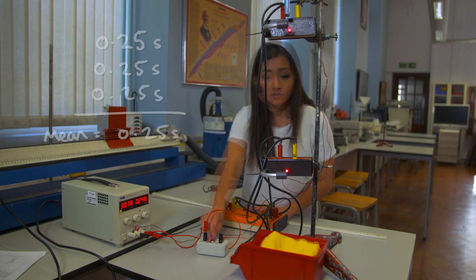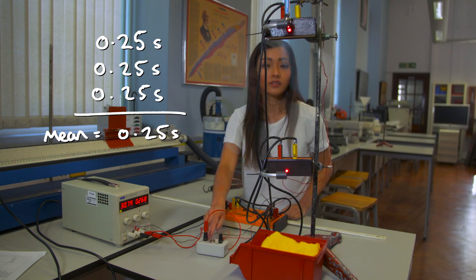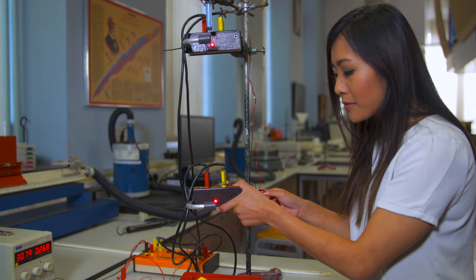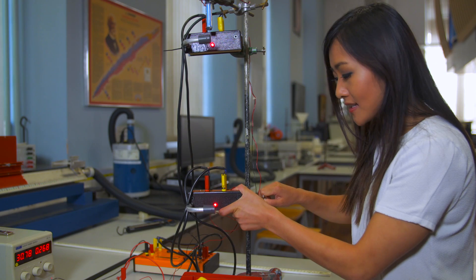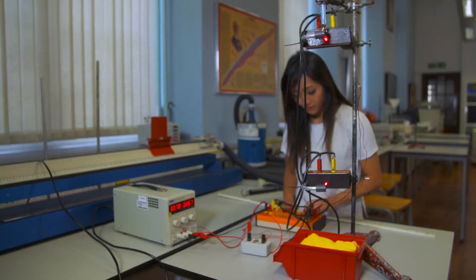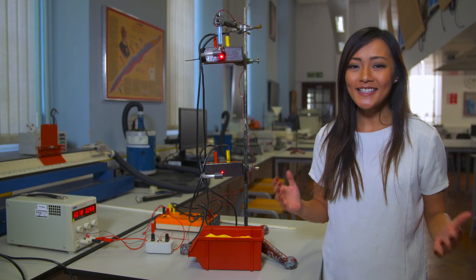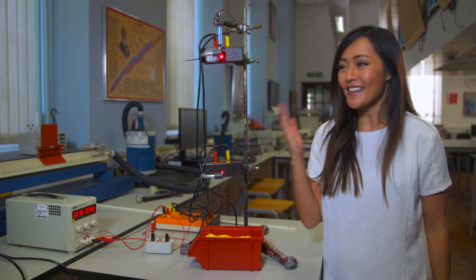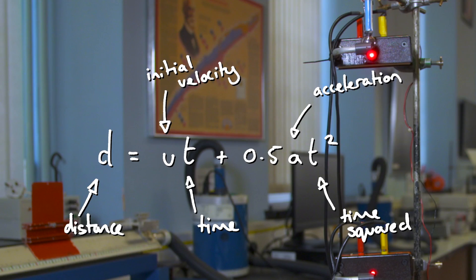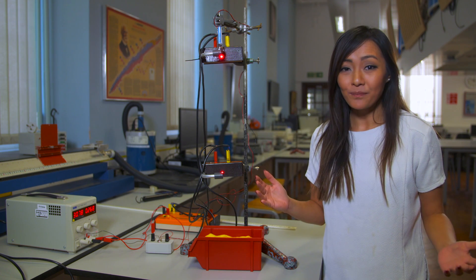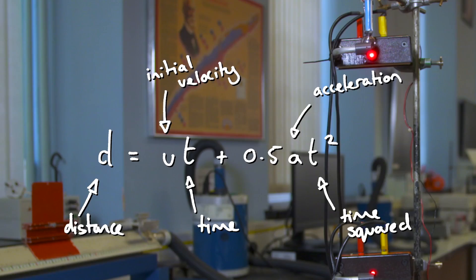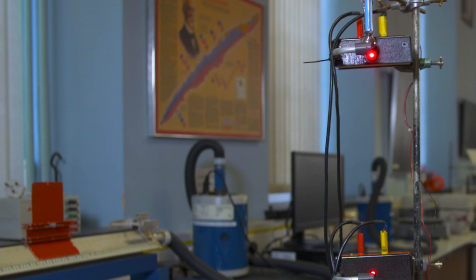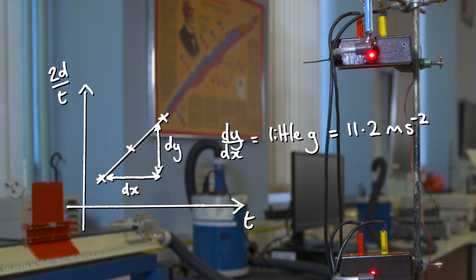Let's repeat this a few more times and take an average. We can repeat the experiment with various distances. Recall that distance is related to acceleration like this. Since g is an acceleration, we can replace a in the equation with g. This means that if we plot a graph of two times distance over time against time, then little g is simply the gradient.